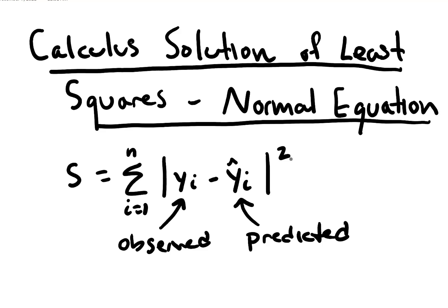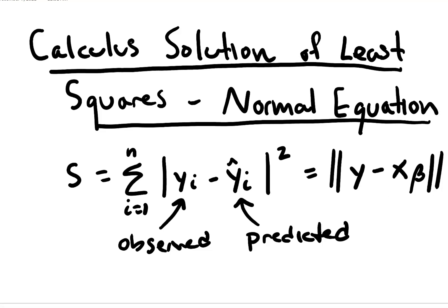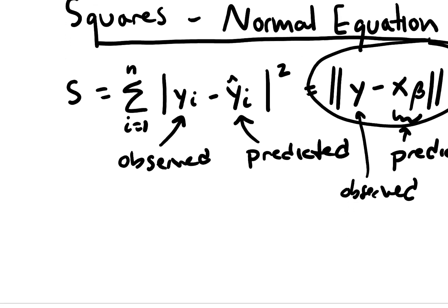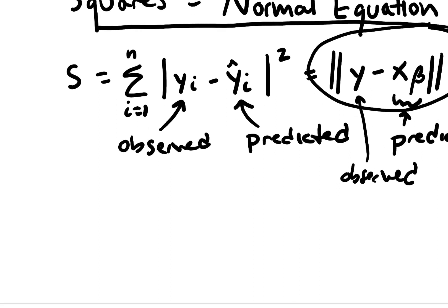This can be written as (y minus Xβ) squared, where this is the predicted value and this is the observed value. What we want to do is minimize this, and the way we can do that is take the gradient of S and set it equal to zero in order to find the function minimum.